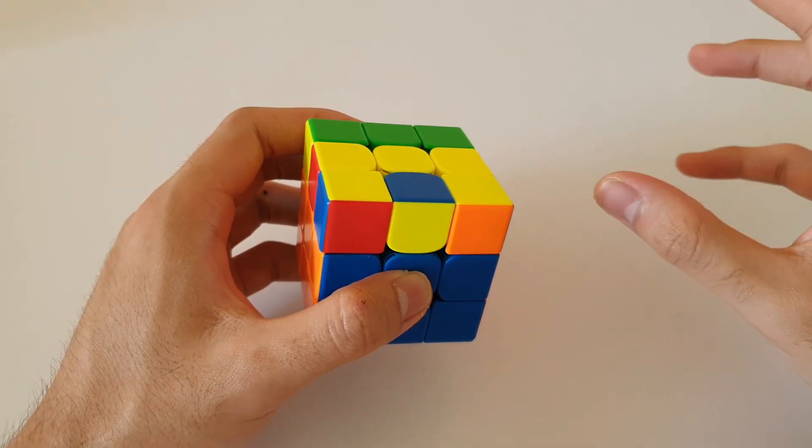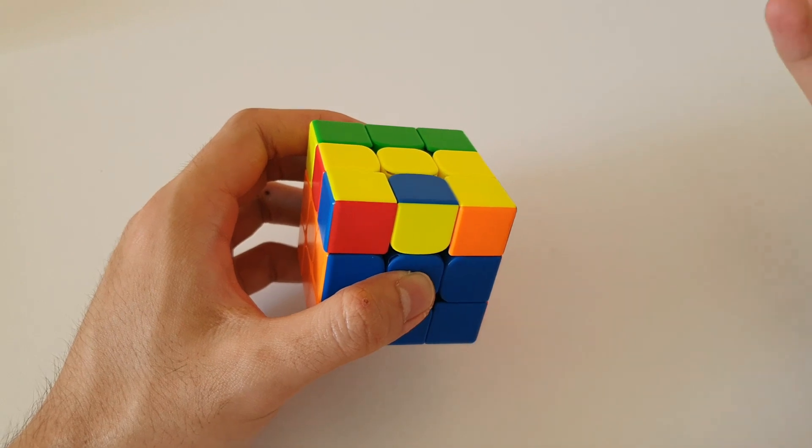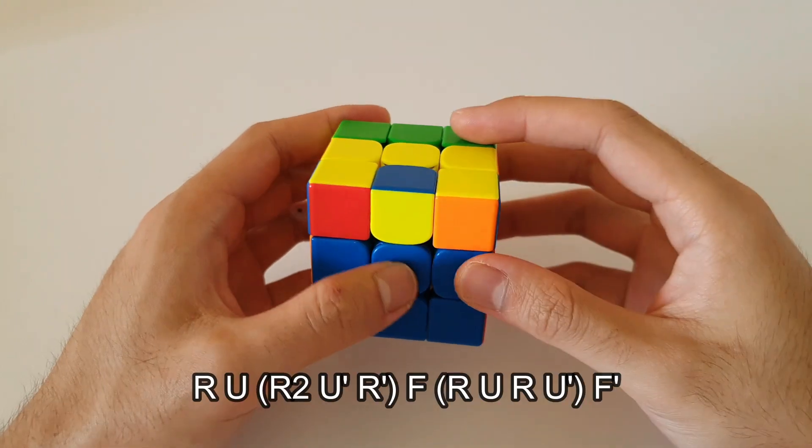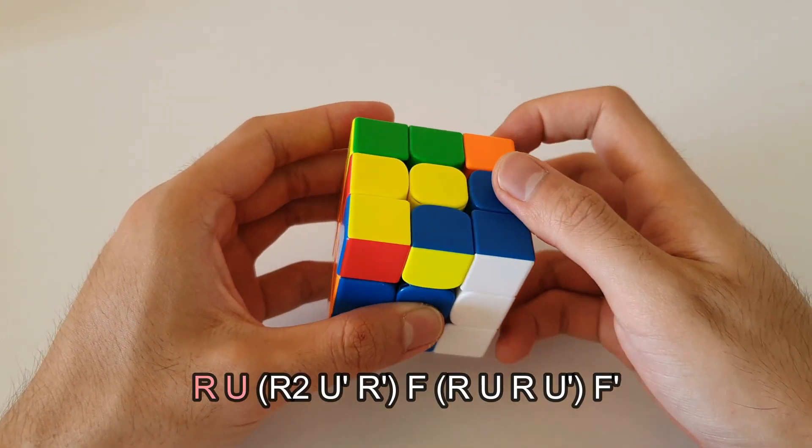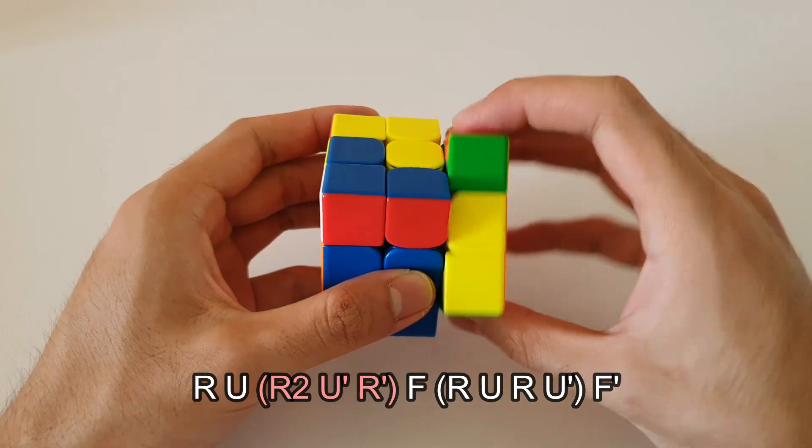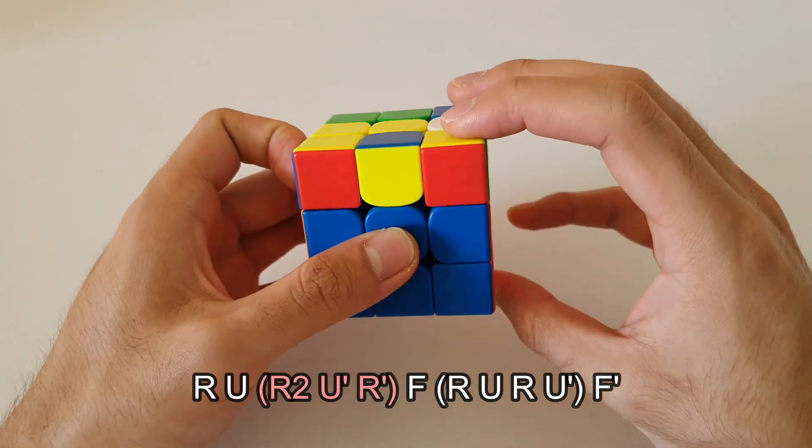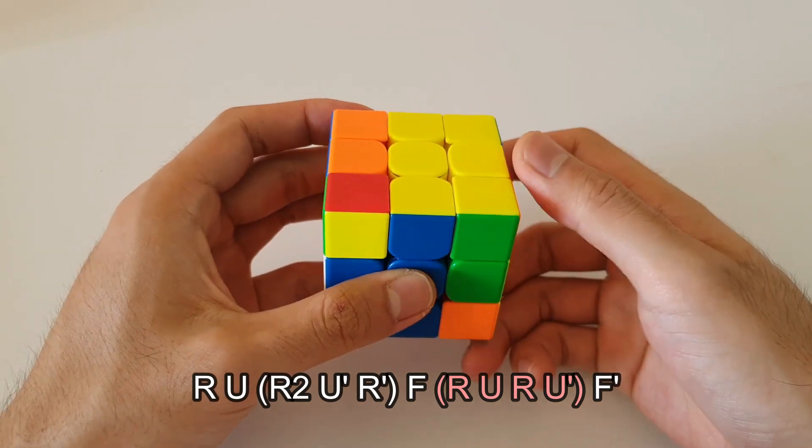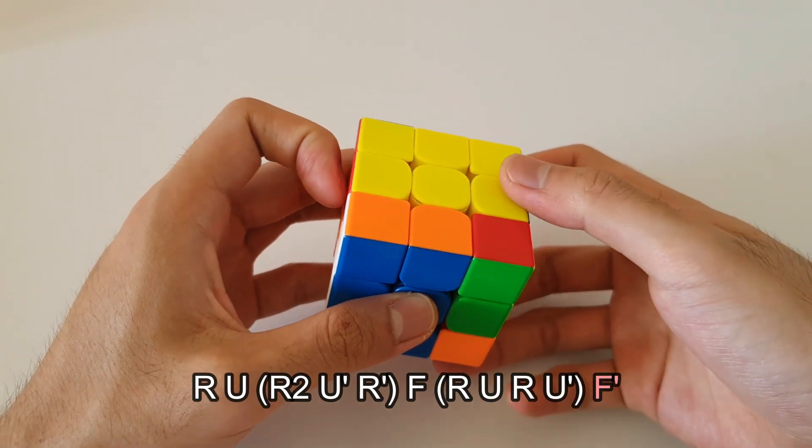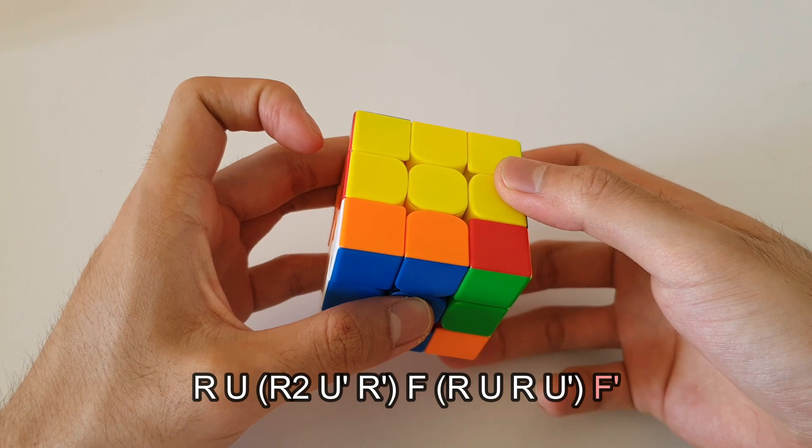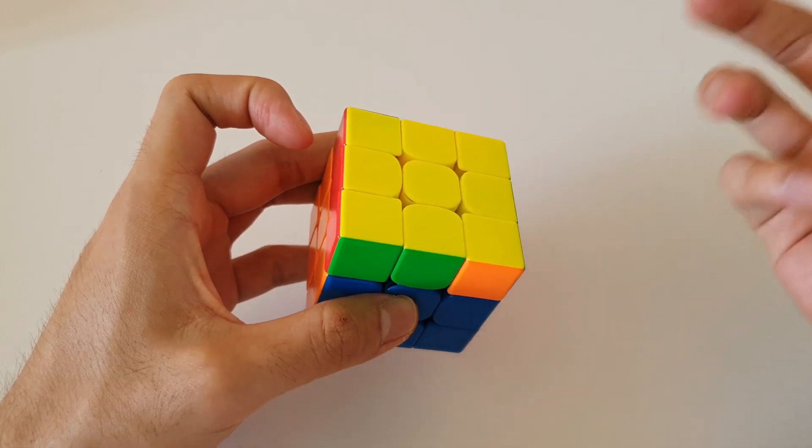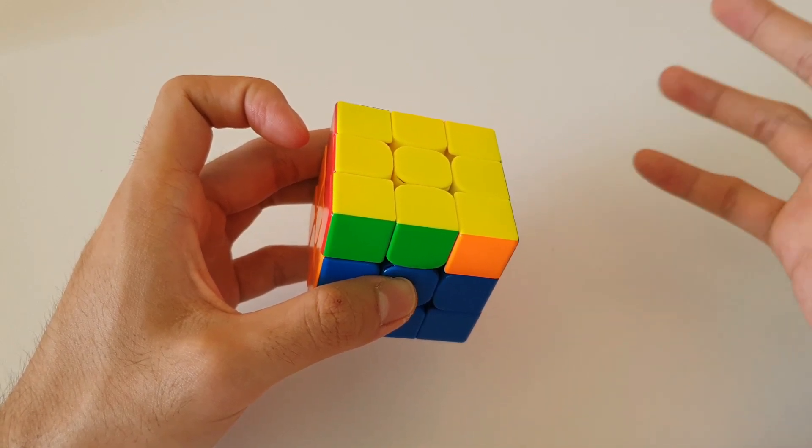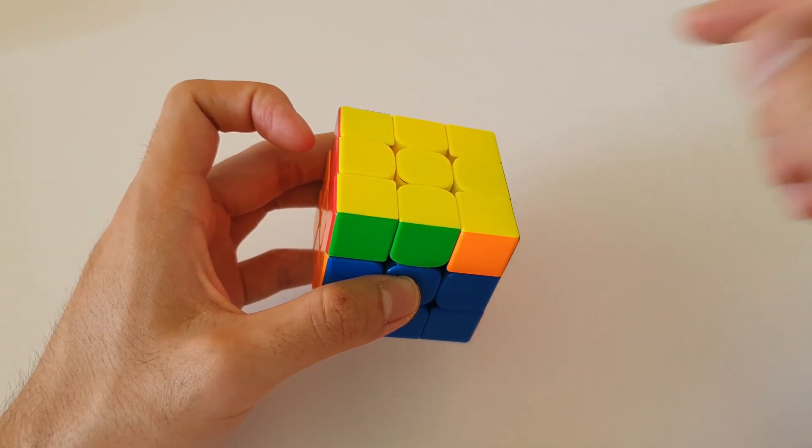However if you're looking for a faster algorithm then this RUF algorithm that I'm about to show you is definitely a better option. This algorithm starts off with an R followed by a U. Following that we got the R2 U' R' and now we follow up with F R U R U' and the final F' can be done with your ring finger down here. And this is a much faster algorithm. Not as easy to remember but a lot quicker and much nicer finger tricks compared to the previous algorithm.